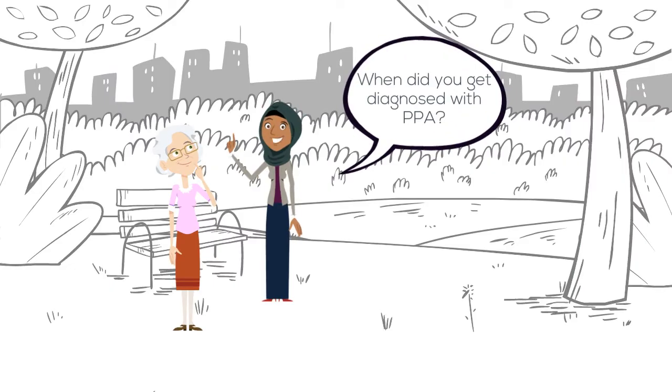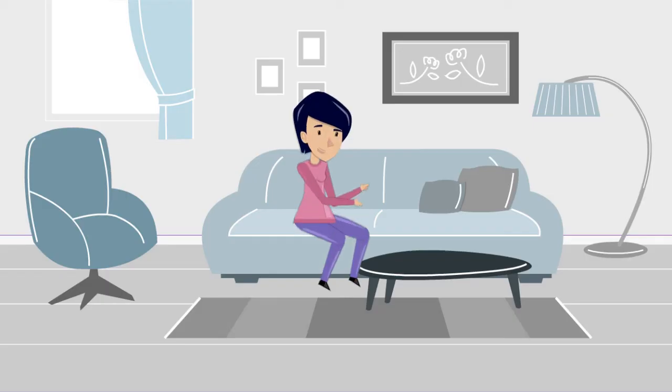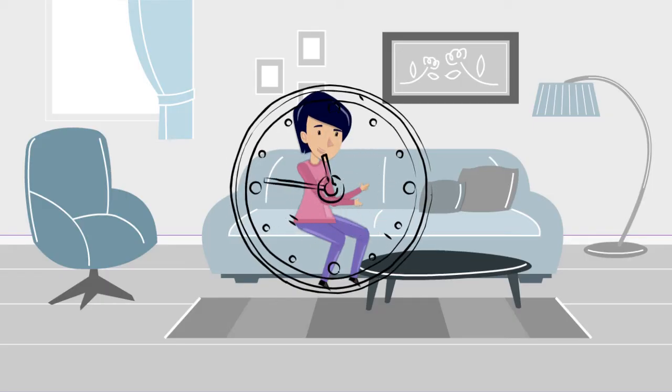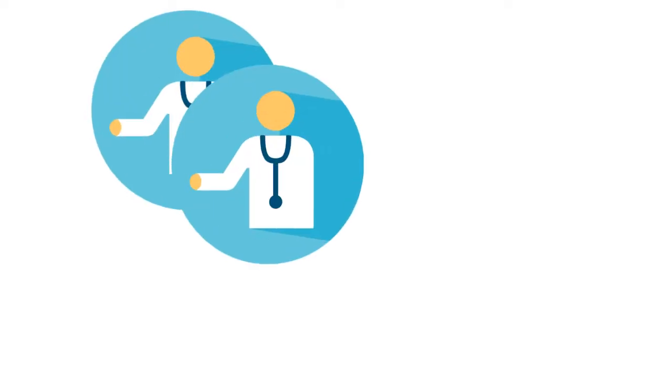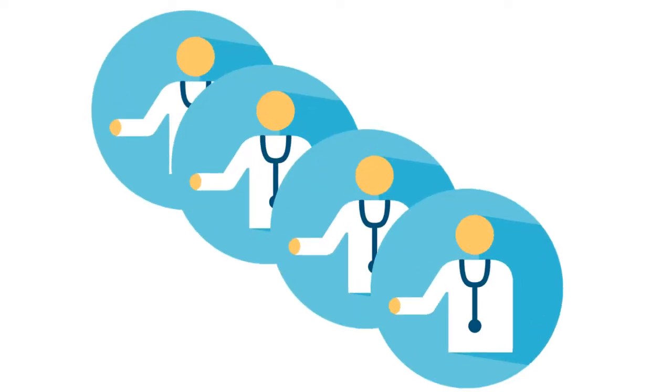When did you get diagnosed with primary progressive aphasia? Well, at first, they thought I was just forgetting words because of aging. But after meeting with enough doctors, I found out I had PPA, a form of dementia.